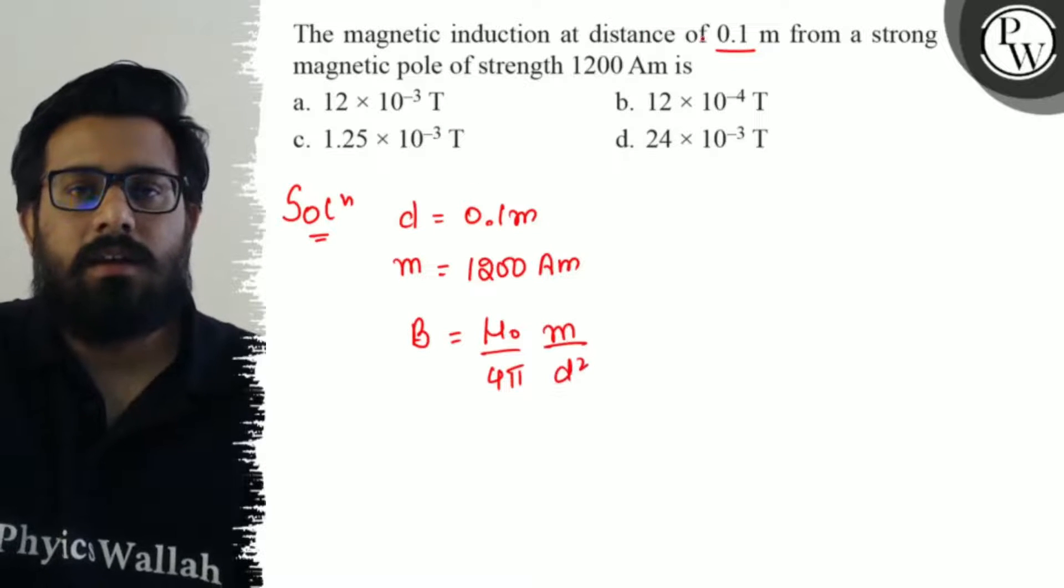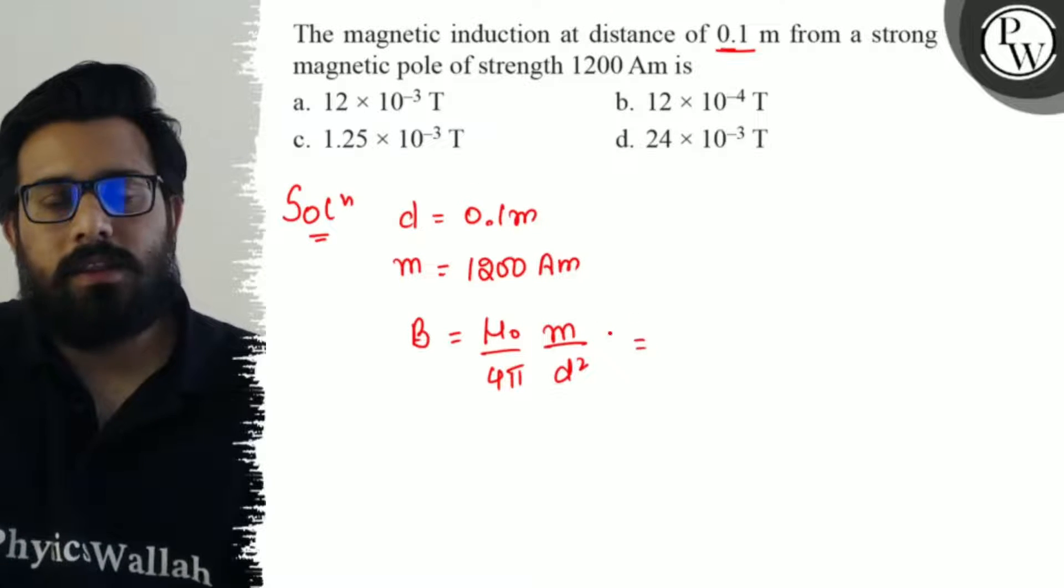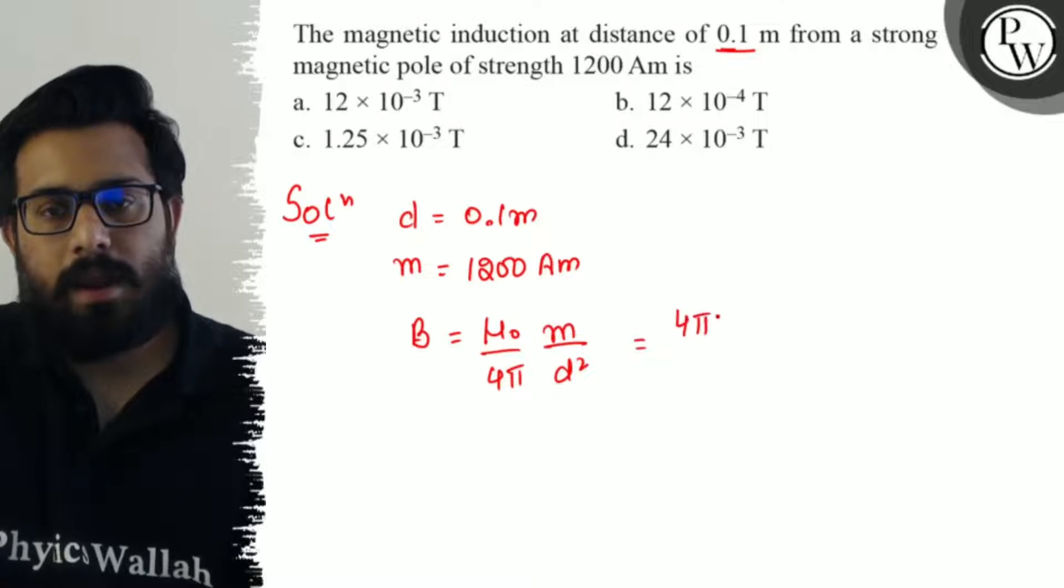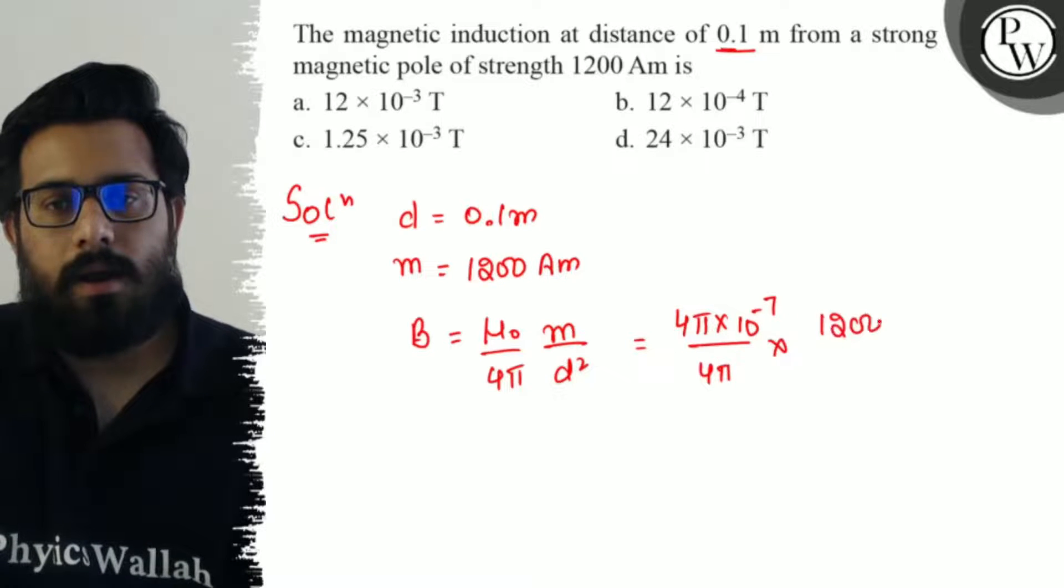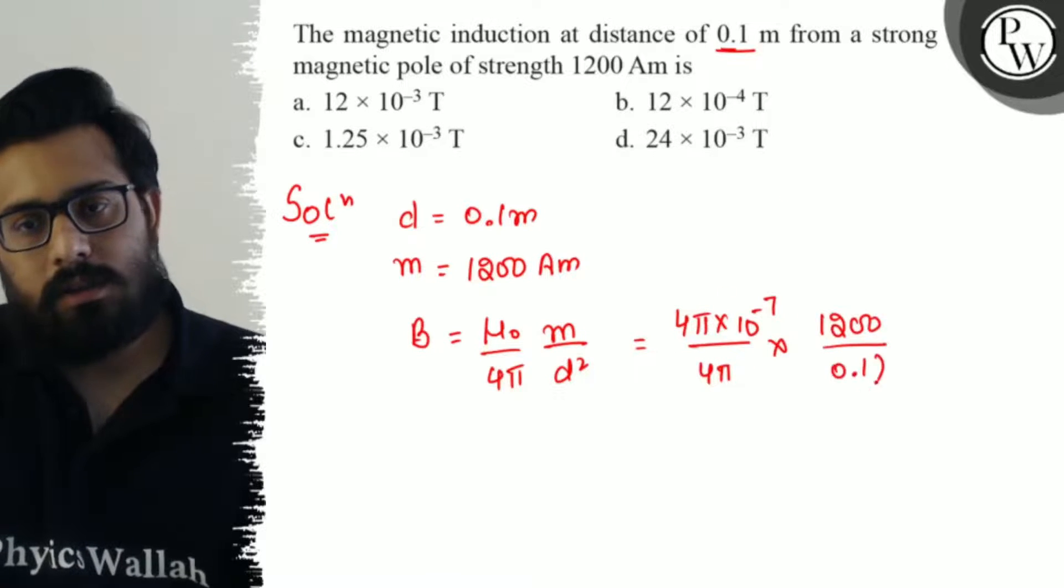Putting the values: μ₀ = 4π × 10⁻⁷ divided by 4π, times the pole strength which is 1200, divided by d squared where d is 0.1 meter squared.